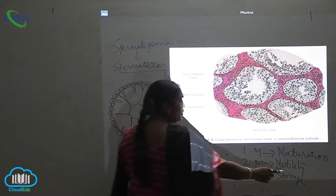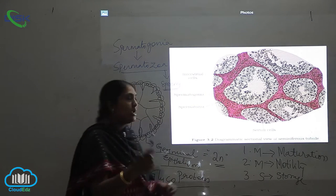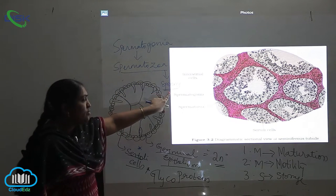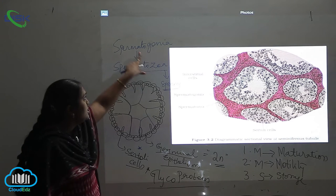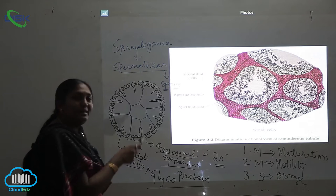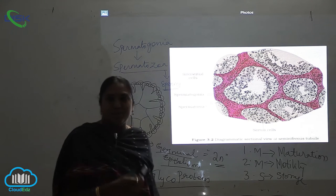The maturation occurs during cell divisions. Ultimately when it is formed through the process of spermatogenesis, we call it maturation, and then there is storage.